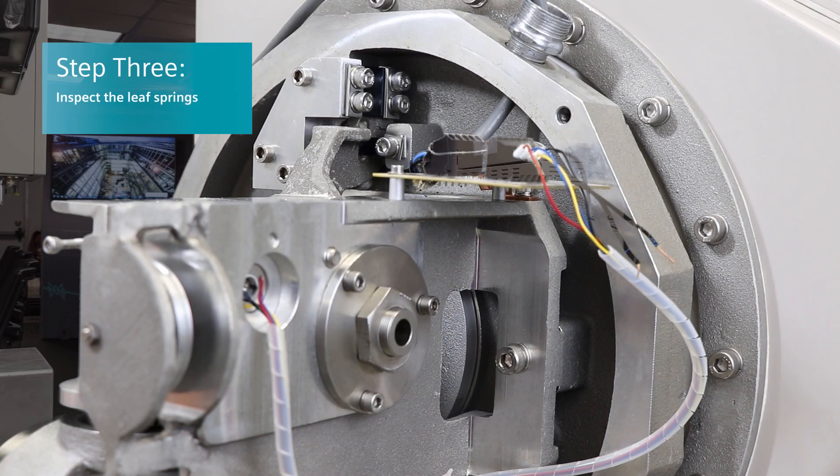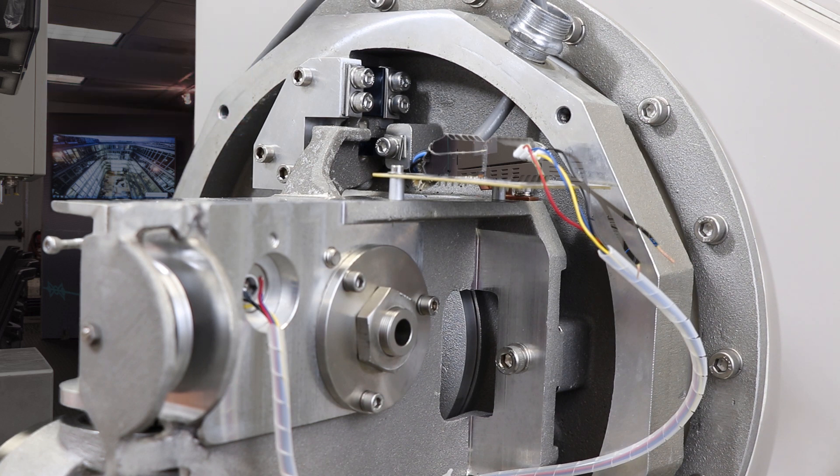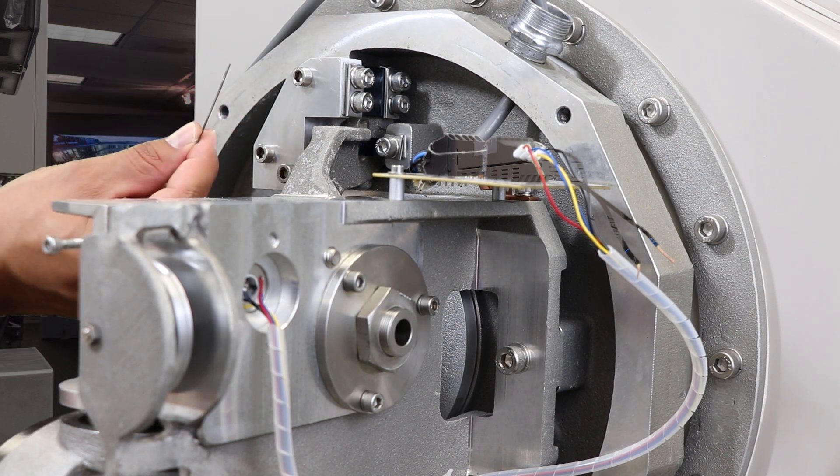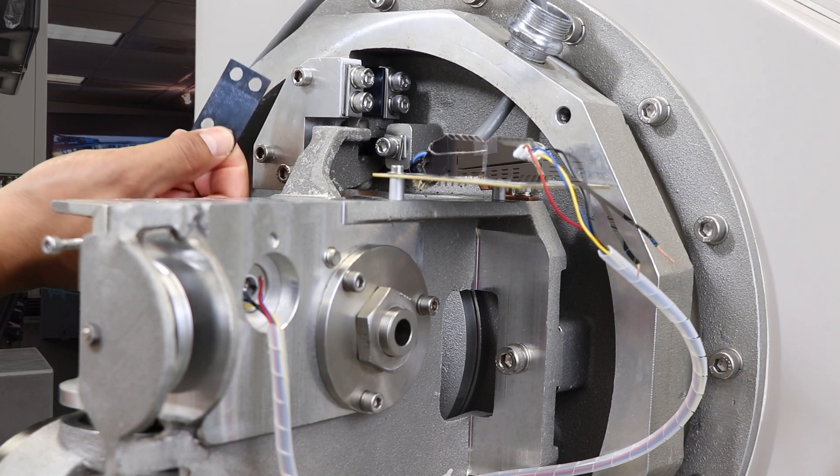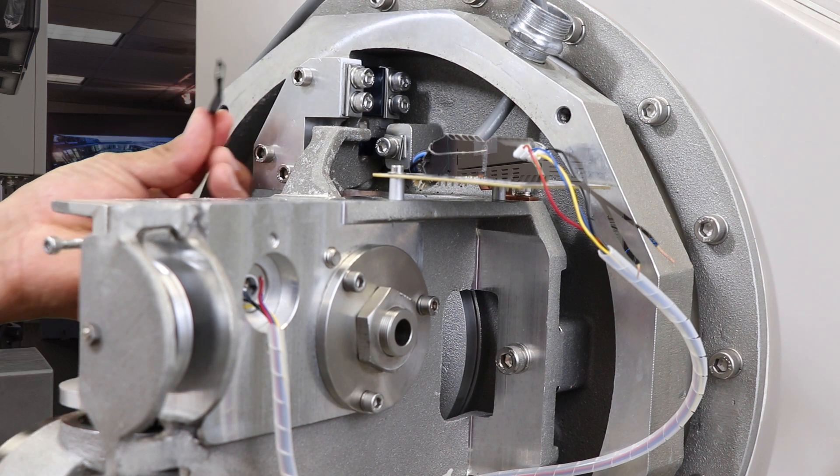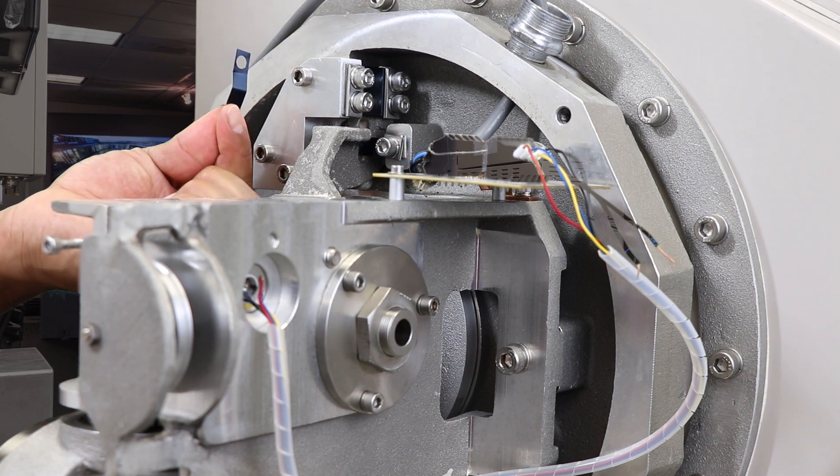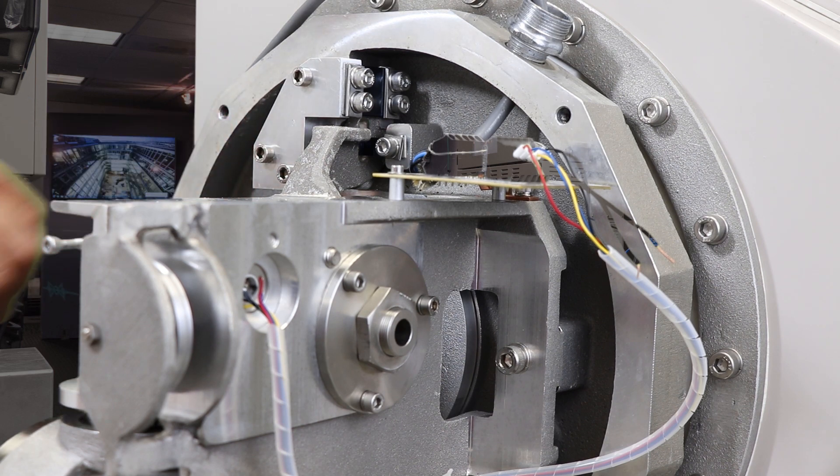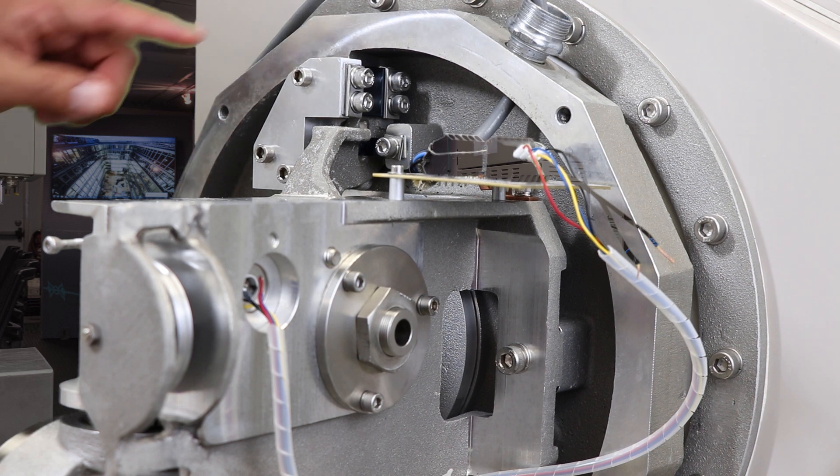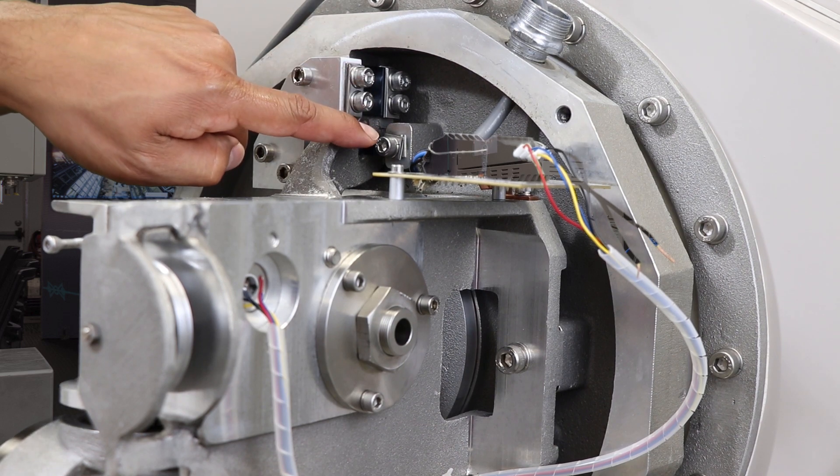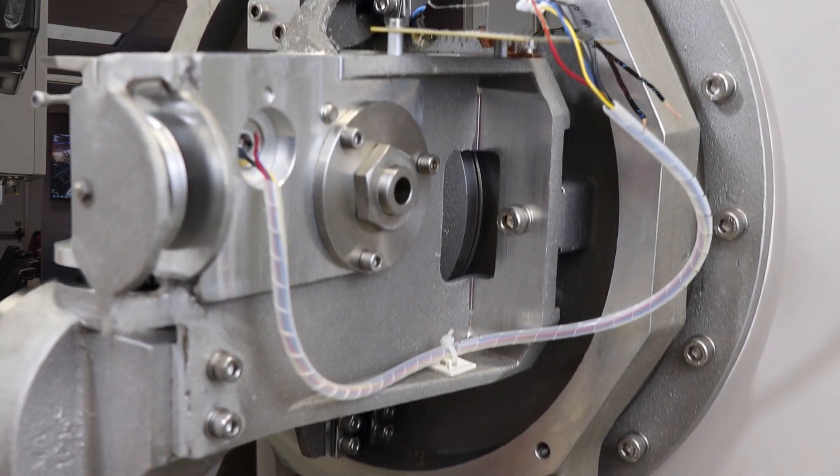Next we're going to inspect the leaf springs. The leaf springs should be flat and not bent. This one is what a leaf spring should look like versus one that is bent. If one or more are bent, you need to replace them. There are four leaf springs, two at the bottom.